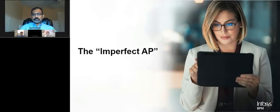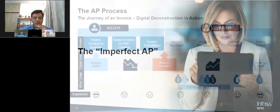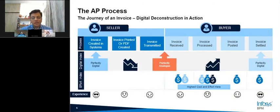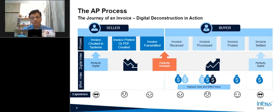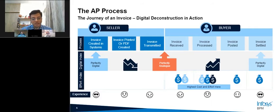Let's start with imperfect AP. Going back to the 101 of AP — a very simplified view of the value stream — it's typically a three-step process: there is an invoice transmission by the supplier, invoices are received, posted, and then paid. However, when you look at what actually happens in practice, it is what we describe as digital deconstruction at its best. A totally digital format — let's say a supplier is on SAP — an IDOC format is translated into an intermediate format using HTML or other technologies.